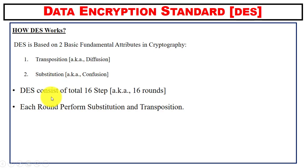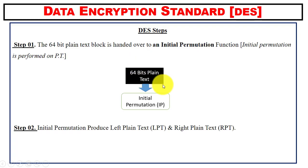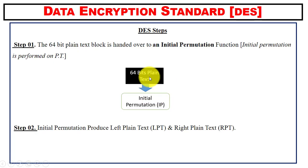The process of converting plain text to ciphertext involves 16 steps, also known as 16 rounds, and each round performs transposition and substitution. In the first step, we have 64-bit plain text, and this plain text is handed over to the initial permutation function.